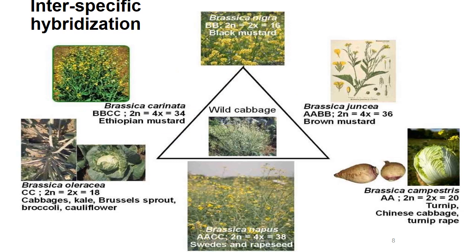Another successful interspecific hybrid is the Brassica triangle given by Nagaharu in 1935. It is a combination of three diploid Brassica species: Brassica nigra, Brassica oleracea, and Brassica campestris. From the cross between Brassica nigra and oleracea, Brassica carinata (tetraploid Ethiopian mustard) originated. From oleracea and campestris came napus, and campestris with nigra gave rise to juncea. These three are tetraploid Brassica species.